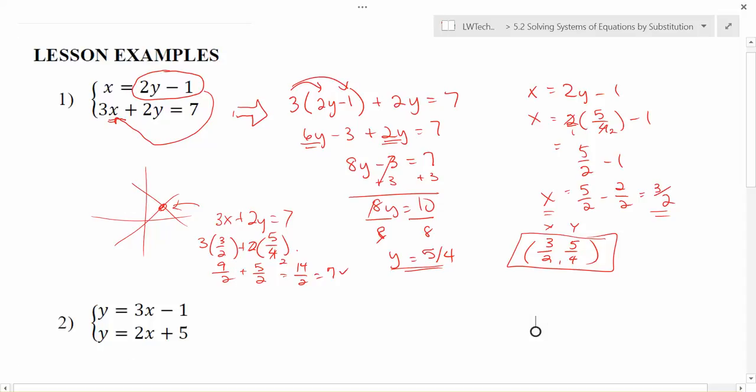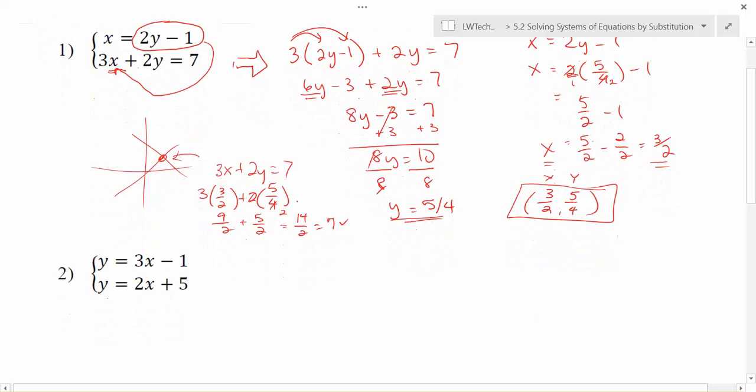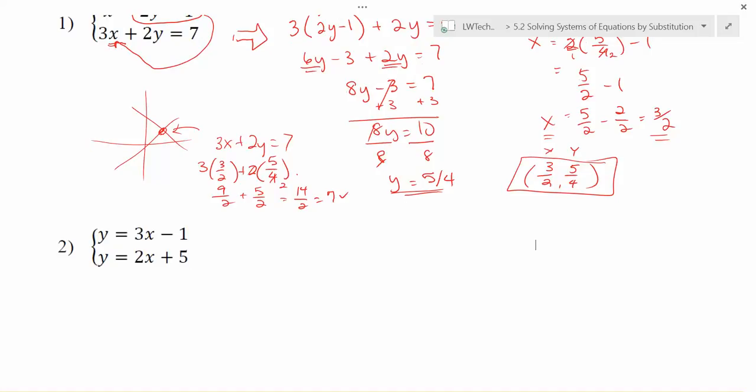In this problem, notice that the x was by itself. So I plugged in 2y minus 1 in for x in the other equation. It really doesn't matter which variable you're substituting for. It's just that you need one of the variables to be by themself. In problem number two here, we have y equals 3x minus 1 and y equals 2x plus 5.